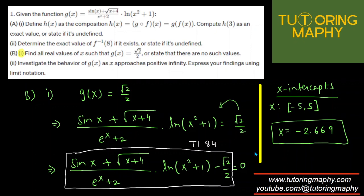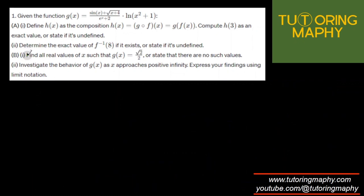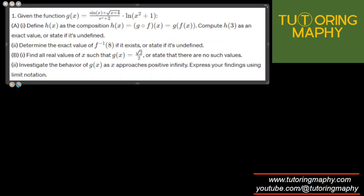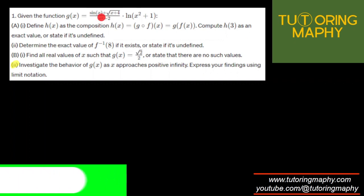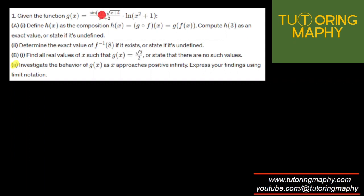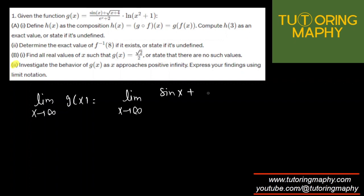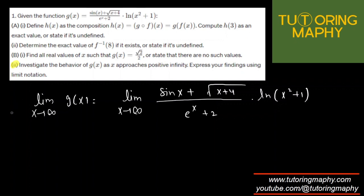For B2, they're asking about the behavior of g(x) as x approaches positive infinity, and to express findings using limit notation. We're looking for the limit as x approaches infinity of g(x), which is the limit as x approaches infinity of sine of x plus square root of x plus 4, over e raised to x plus 2 times ln of x squared plus 1.